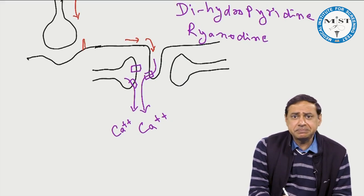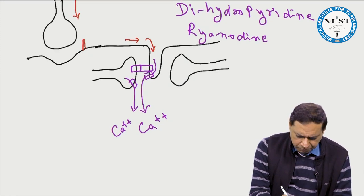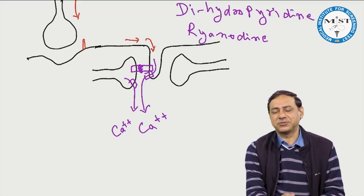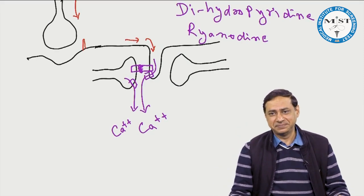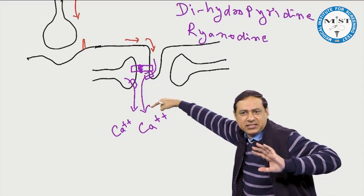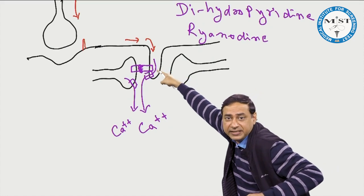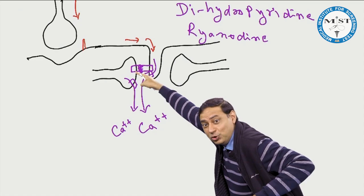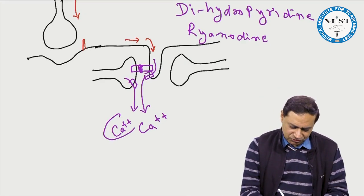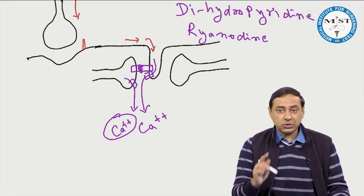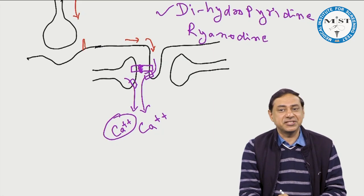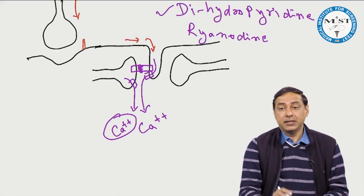The ryanodine receptor and the dihydropyridine receptor are physically connected to each other, as seen under electron microscopy. So while calcium does come from the T-tubule via the dihydropyridine receptor, that calcium is essentially useless on its own. Because the dihydropyridine receptor and ryanodine receptor are physically connected, when the dihydropyridine receptor is activated, the ryanodine receptor is also activated — calcium is released, and the muscle contracts. This is mechanical coupling, seen in skeletal muscle.